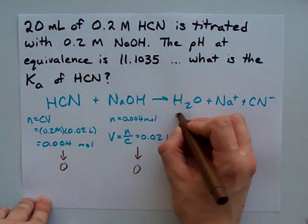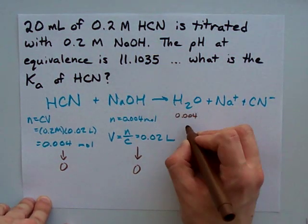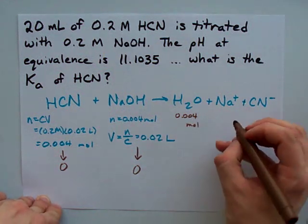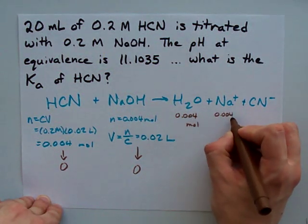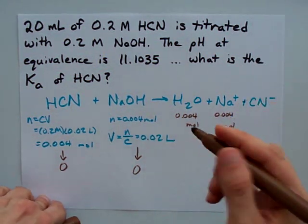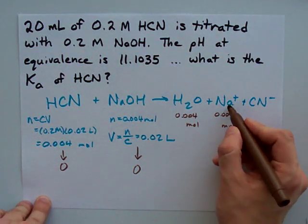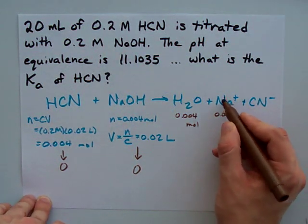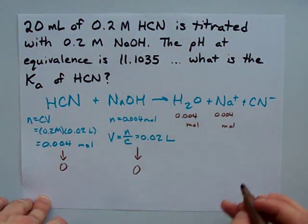Those concentrations go to zero because they neutralize each other. And we end up making 0.004 moles of water, not that we care. 0.004 moles of Na+, we don't care about that either because it's the conjugate of a strong base, so it is super weak and won't affect the pH.